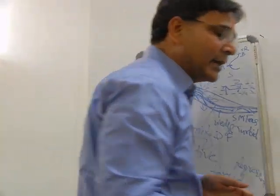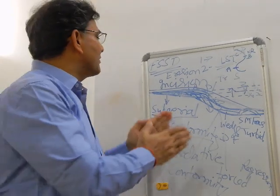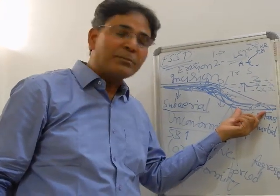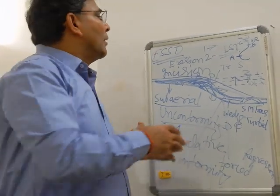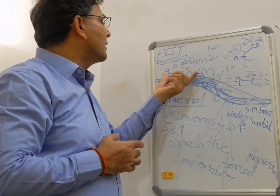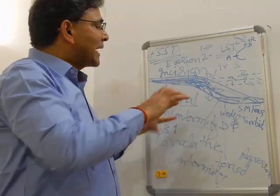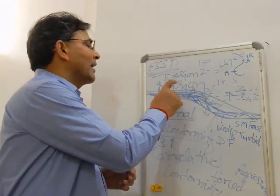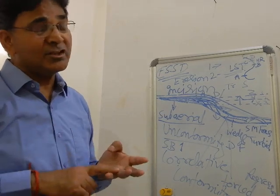To revise in a nutshell: during the falling stage system track, terrigenous sediments and sediments eroded from the continental shelf bypass the continental shelf and are deposited into the deep sea as submarine fans, clinoforms, and wedges. The FSST is characterized by degradation and progradation. The lowstand system track is capped between sequence boundary number 1 and the transgressive surface, and is characterized by progradation and aggradation. You can learn more from the first and second lectures — this is the third lecture in the series on sequence stratigraphy.